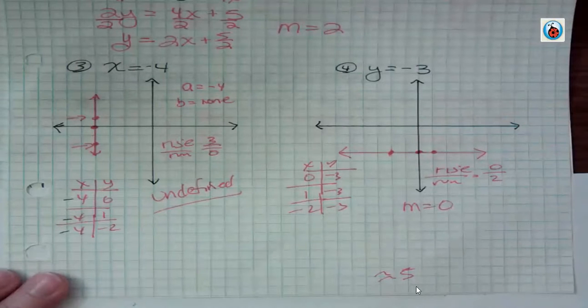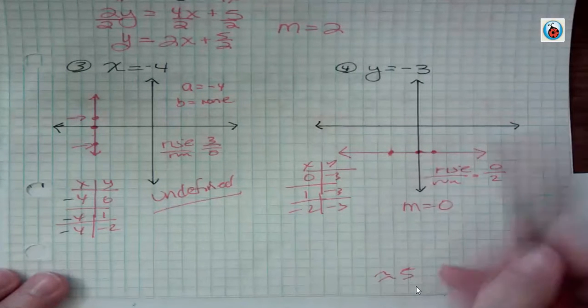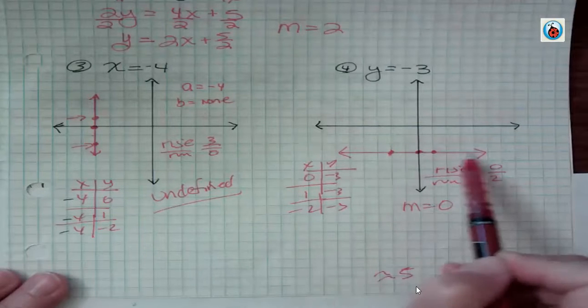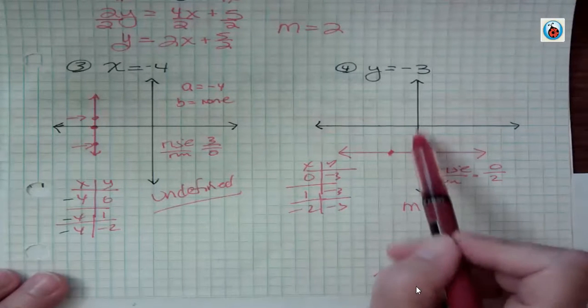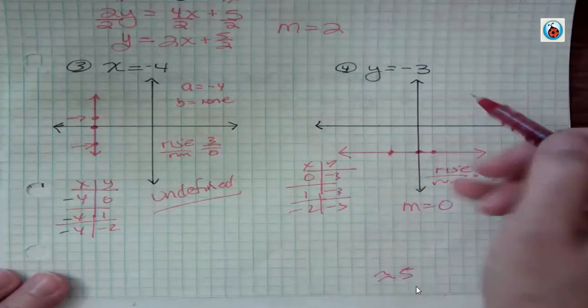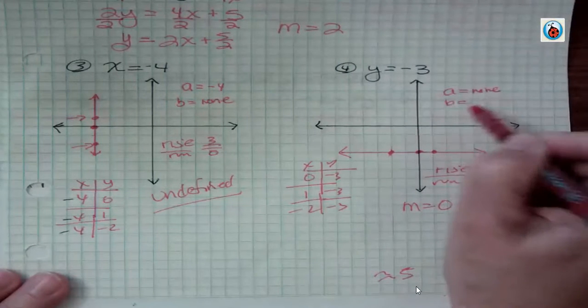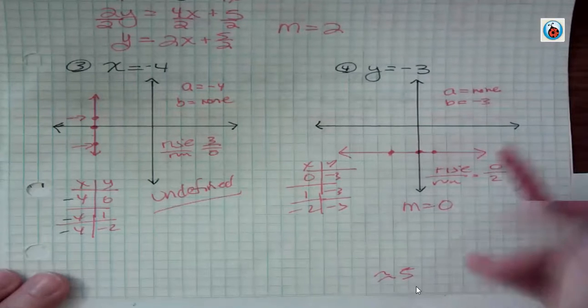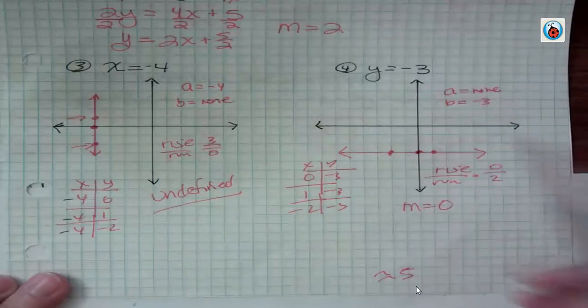On the other hand, when you have y equals negative 3, this one I did graph correctly, y equals negative 3 is a horizontal line at negative 3. It's never going to cross the x-axis because it's parallel. So in this case, our A would be none, and B would be negative 3. It crosses the y-axis at negative 3, but it never crosses the x-axis.